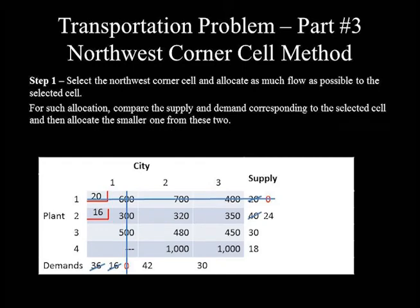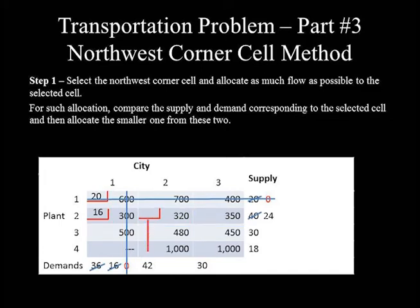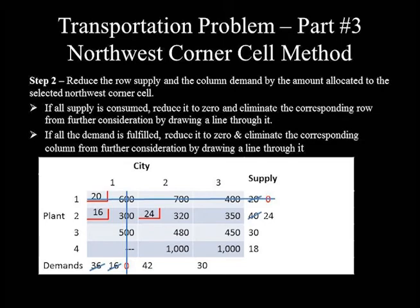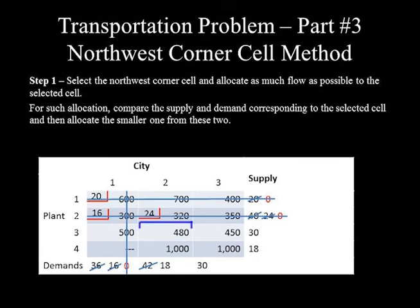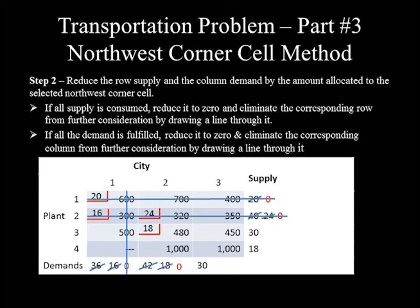With column one and row one deleted, the active column at the left is column two and the top row is row two. The next Northwest corner cell is at the intersection of column two and row two, with demand 42 and supply 24. Allocate 24, reducing supply to 0 and demand from 42 to 18. Row two is crossed out. The next Northwest corner cell has demand 18 and supply 30; allocate 18, reducing demand to 0 and supply from 30 to 12.